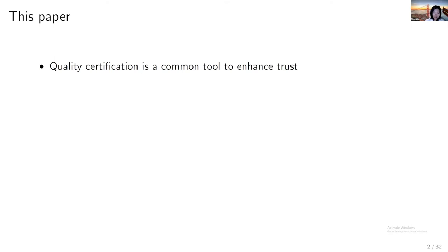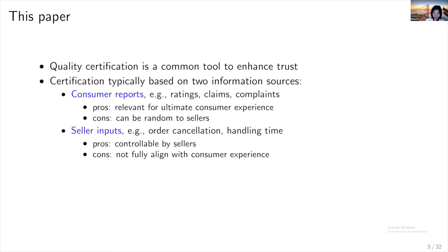If you look across quality certification programs on online marketplaces, you will find that quality certificates are usually based on two types of information. First, consumer reported information such as ratings, claims, complaints, and so on. There is a good reason for using such information because it is relevant for the ultimate consumer experience and good for the long-term health of the platform. However, this consumer reported information can be random noise to individual sellers — something they have no good control over. For example, consumers can blame the seller for a late shipment when in fact it was due to a third-party shipper.